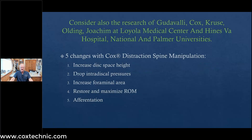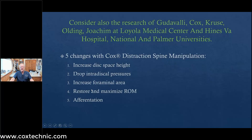Consider also the research of Gudavalli, Cox, Cruz, Olding, and Yoakam at the Loyola Med School, Heinz VA Hospital in collaboration with National Palmer Universities. We showed five things that happen when you perform this type of manipulation. Number one, we increase disc base height. We drop intradiscal pressures up to a negative 190 millimeters of mercury in a lumbar spine and 510 in a cervical spine. We increase foraminal area by 28%. We restore and increase physiological range of motion, and we create afferentation — the normal excitatory impulses via the lateral spinal thalamic tracts, the tracts of Gall and Burdach for proprioception. The somatosensory cortex of the brain creates the efferent corticospinal tracts that carry endorphins to the area of pain.